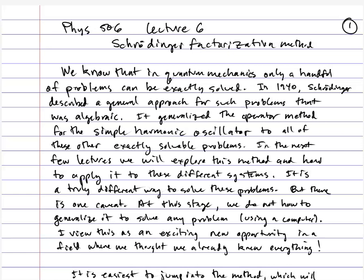Welcome to Lecture 6. This lecture we're going to talk about the Schrödinger factorization method. This is a method that you probably have never seen before. It generalizes the abstract operator method that you use for the simple harmonic oscillator to all other exactly solvable problems.